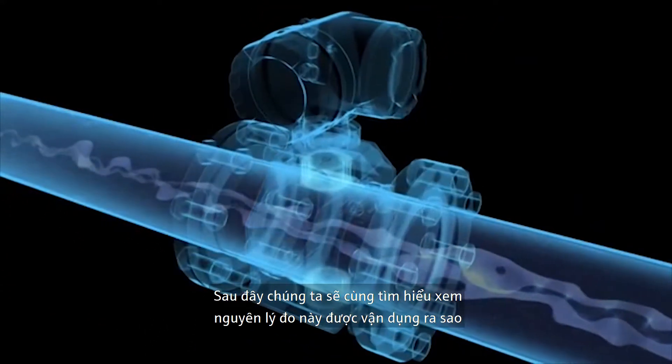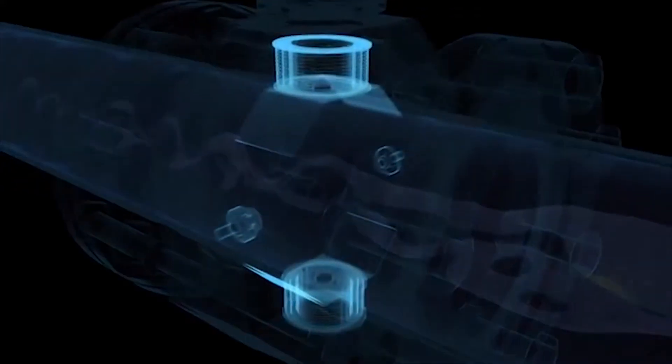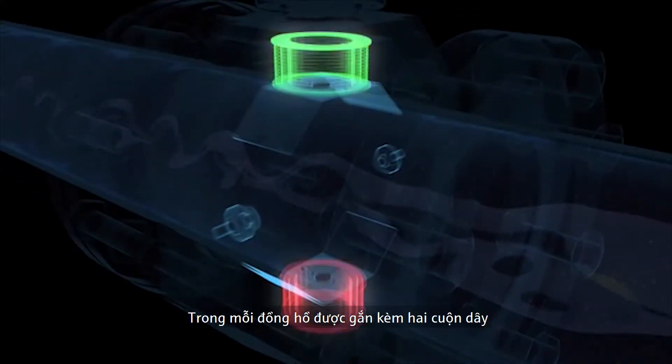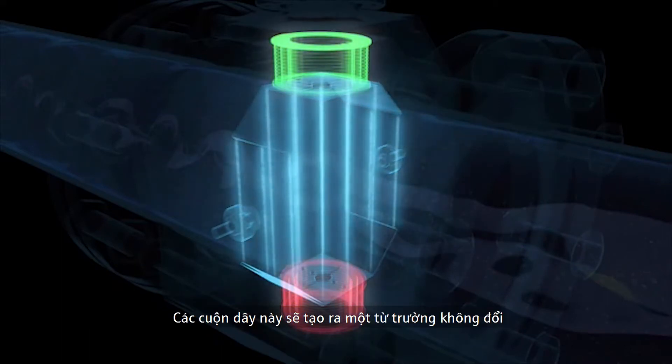Let's take a closer look at how this measurement method works. Two field coils are located inside each electromagnetic flow meter. With the help of pole shoes, these coils generate a constant magnetic field over the entire cross section of the measuring tube.